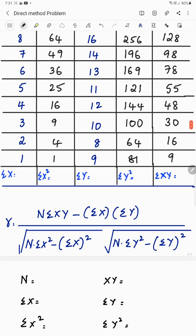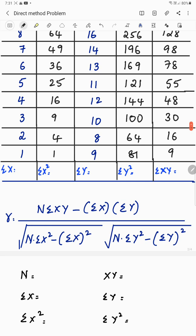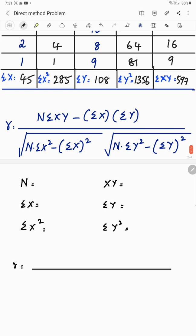And the next very simple thing, you need to add everything together. This is the most important part. 48, 250, 285, 108, 1356, 597. Then put all this in the formula.